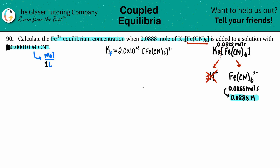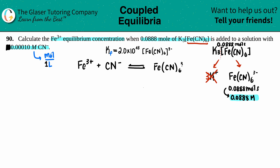Now let's write the balanced formation equation. Kf stands for formation — you're forming the compound. The two components that make up the complex ion are Fe³⁺ and CN⁻, so: Fe³⁺ + 6CN⁻ ⇌ Fe(CN)₆³⁻. We put a 6 in front of CN⁻ because there are six cyanides, and the equation is now balanced.